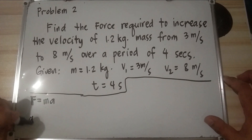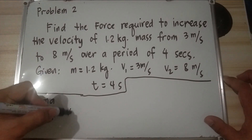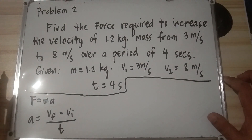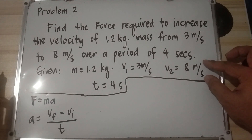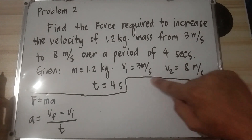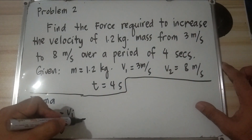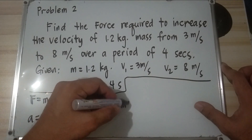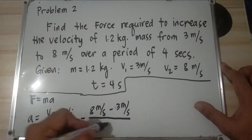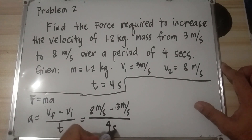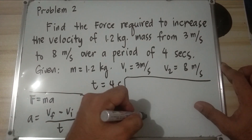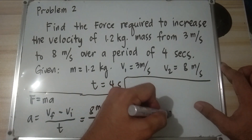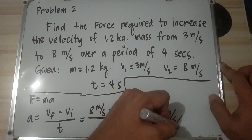Recall that acceleration equals v_f minus v_i over time. Here, v_f is 8 meters per second and v_i is 3 meters per second. Plugging in: 8 minus 3 over 4 equals 5 over 4, which gives 1.25 meters per second squared.